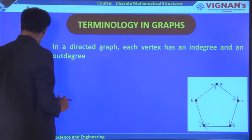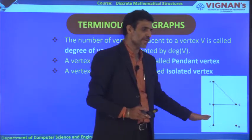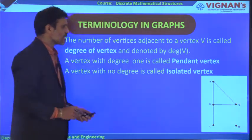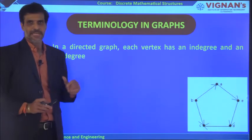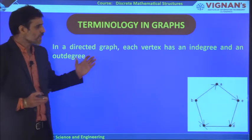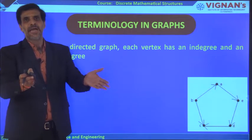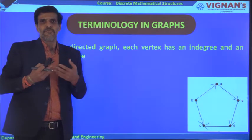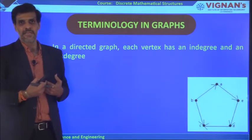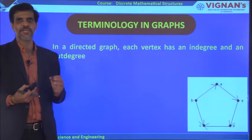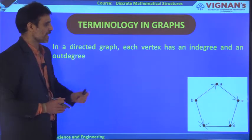In a directed graph, each vertex has in-degree and out-degree. In an undirected graph, there is no in-degree or out-degree — just degree. In a directed graph, some edges move out from a vertex and some come into it. The number of edges leaving a vertex is called the out-degree, and the number of edges coming towards a vertex is called the in-degree.